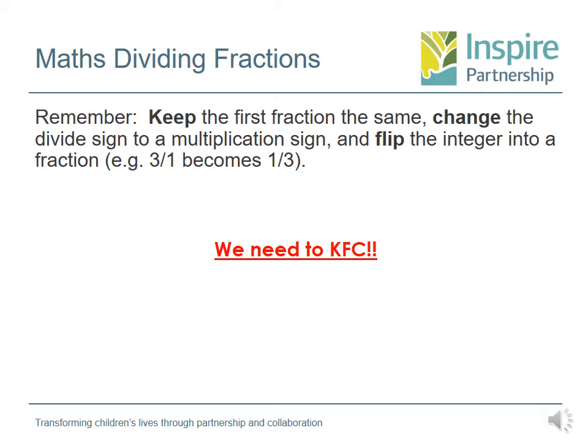Like I said, we're going to be looking at dividing fractions today. The main thing we need to remember is that we keep the first fraction the same, we change the divide sign to a multiplication sign, and we flip the integer into a fraction. So, for example, if it was 3 over 1 — which would be 3 as your whole number — it becomes 1 over 3 because we're going to flip it. I like to refer to this as KFC.